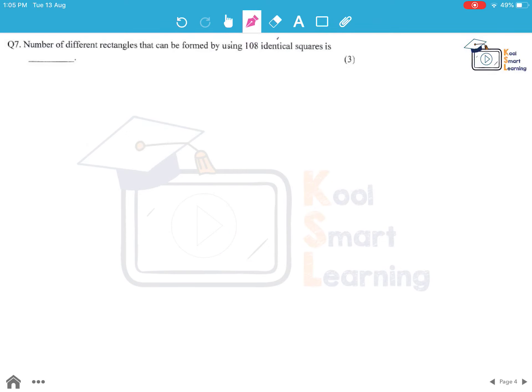Moving on to the next question. Number of different rectangles that can be formed by using 108 identical squares. So let's first of all take the square to be the area to be of area 1 cm square.